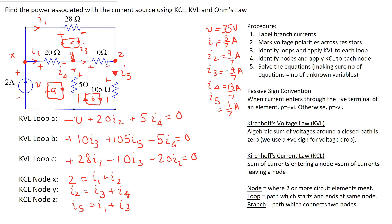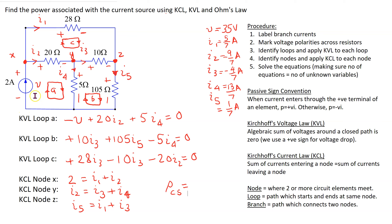Once we solve the circuit, we can use the results to find any desired powers. In this case we are interested in the power associated with the current source. The power is the product of voltage and current, and we use passive sign convention to decide the sign. The 2-amp current is entering the terminal marked minus, so the power is written with a minus sign: power = −V × 2 = −35 × 2 = −70 watts. This negative result signifies that the independent current source is generating power in this circuit.